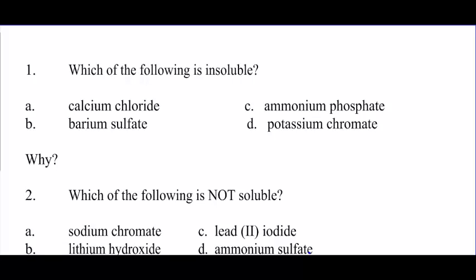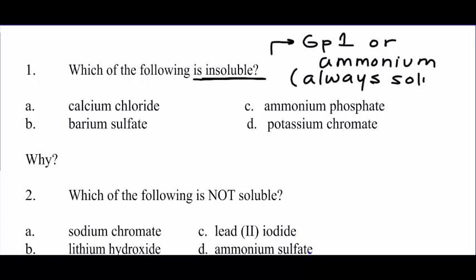Here's an example of a type of problem you might see using table F. It says, which of the following compounds is insoluble? What I always do is I always look for group 1, a compound with group 1, or ammonium. Because those are always soluble. And a lot of times you can eliminate most of the choices if you look for those.